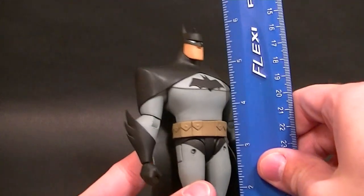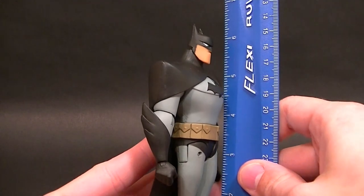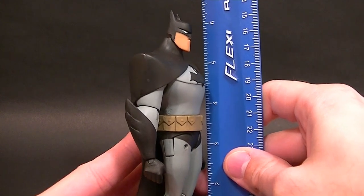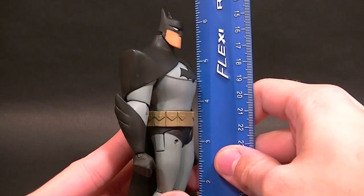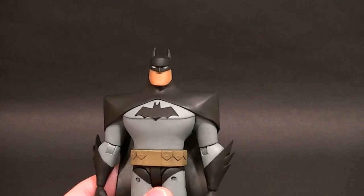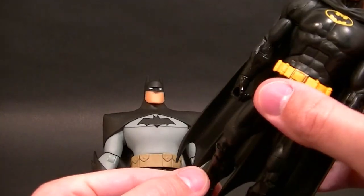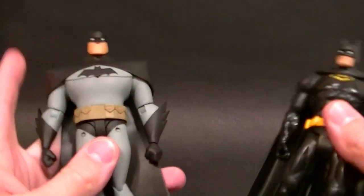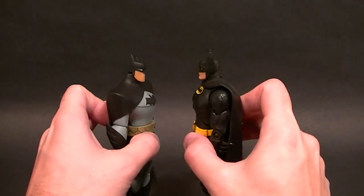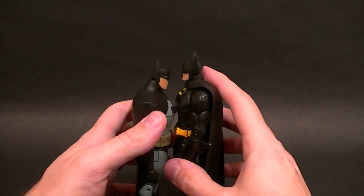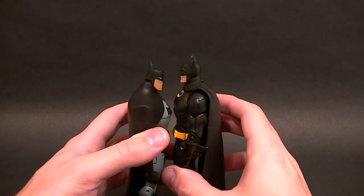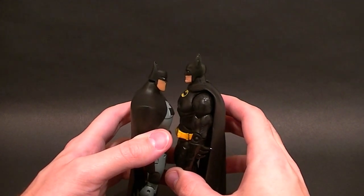He stands about six and a quarter to the top of his ears, about almost six inches exactly to the top of his head. And just so you have a little bit of an idea comparing to a standard DC Universe Classics Batman figure, the DC UCs are a little tall for six inch scale but you can see it's not that much of a difference. This Batman is about six and a half inches tall.